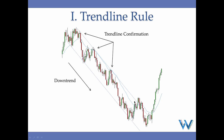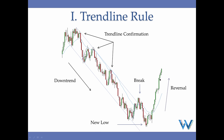Notice what price created — there was a break of this channel, with candles closing outside. Most traders will think the trend is over and start counter-trend trading, looking for buying opportunities. But according to the trend line rule, we cannot go long just yet. This downtrend needs a new low — a retest of the previous low. Notice what price created: a move to a new extreme. After the new extreme was formed, we expected correction or possibly straight-up reversal, and price in this instance straight-up reversed.